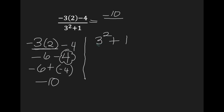The denominator is 3 squared plus 1. I have exponents and addition — exponents would be first. 3 squared is 9, plus 1 gives me 10. So negative 10 divided by positive 10 gives me negative 1. Because negative divided by positive is a negative — when the signs are different while multiplying or dividing, the result is negative.